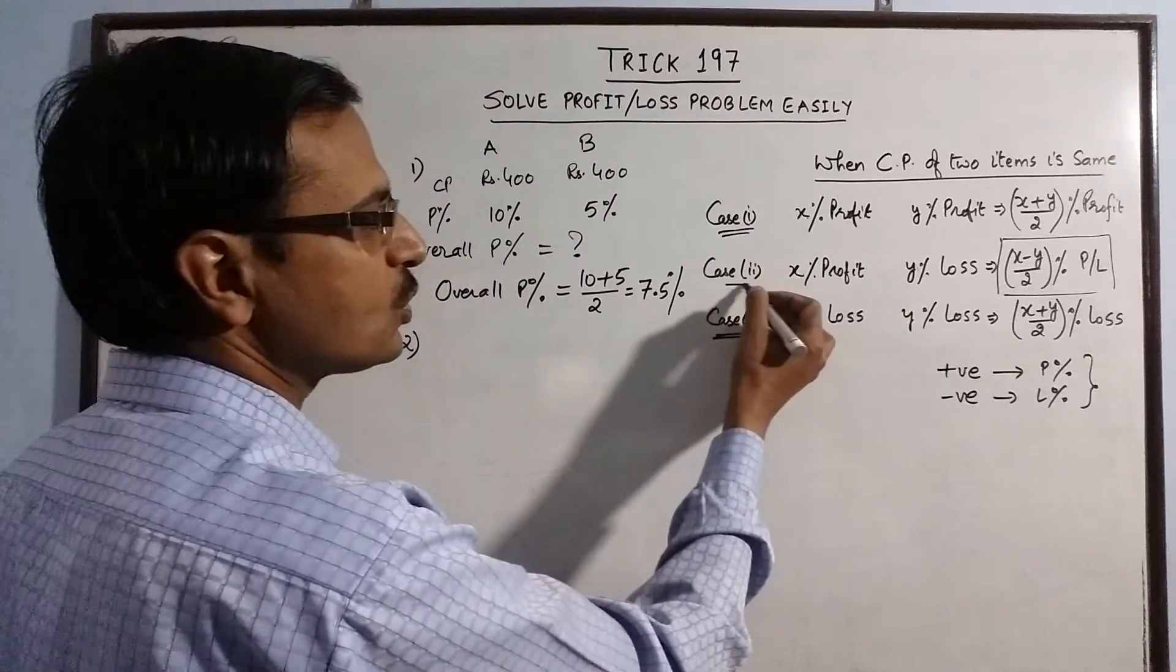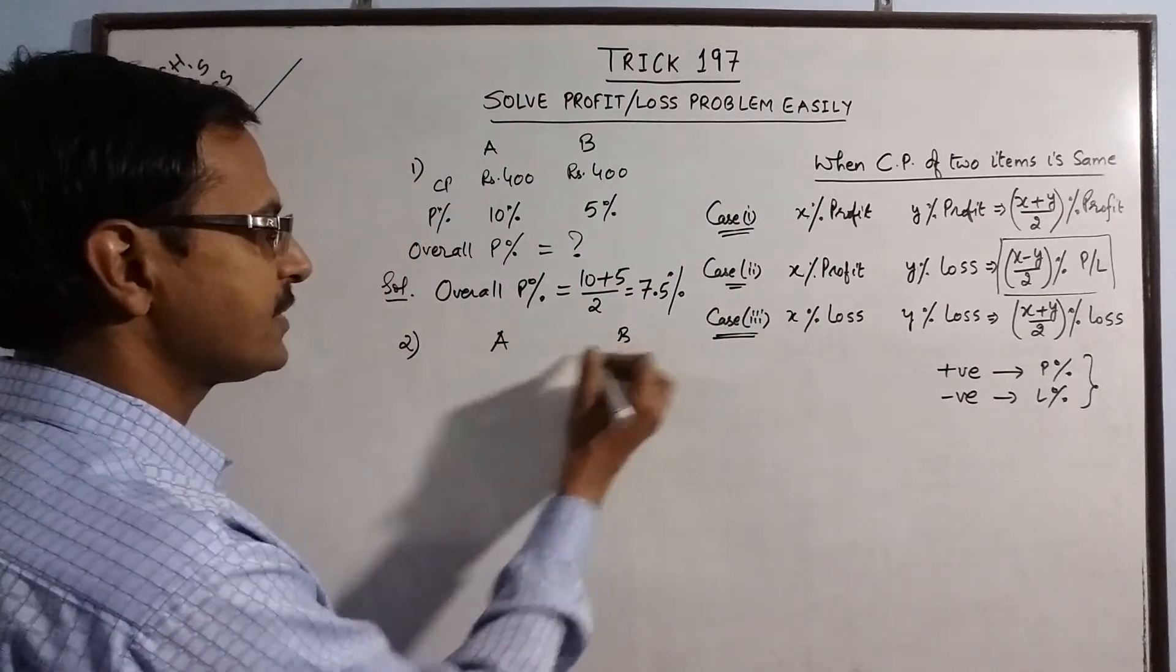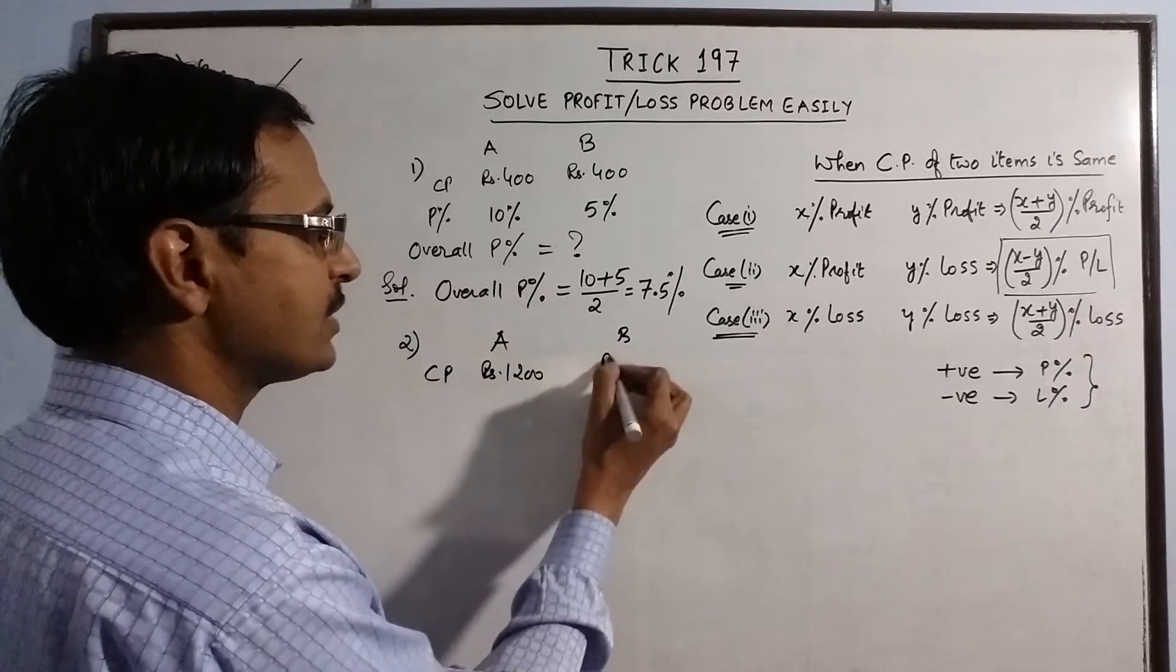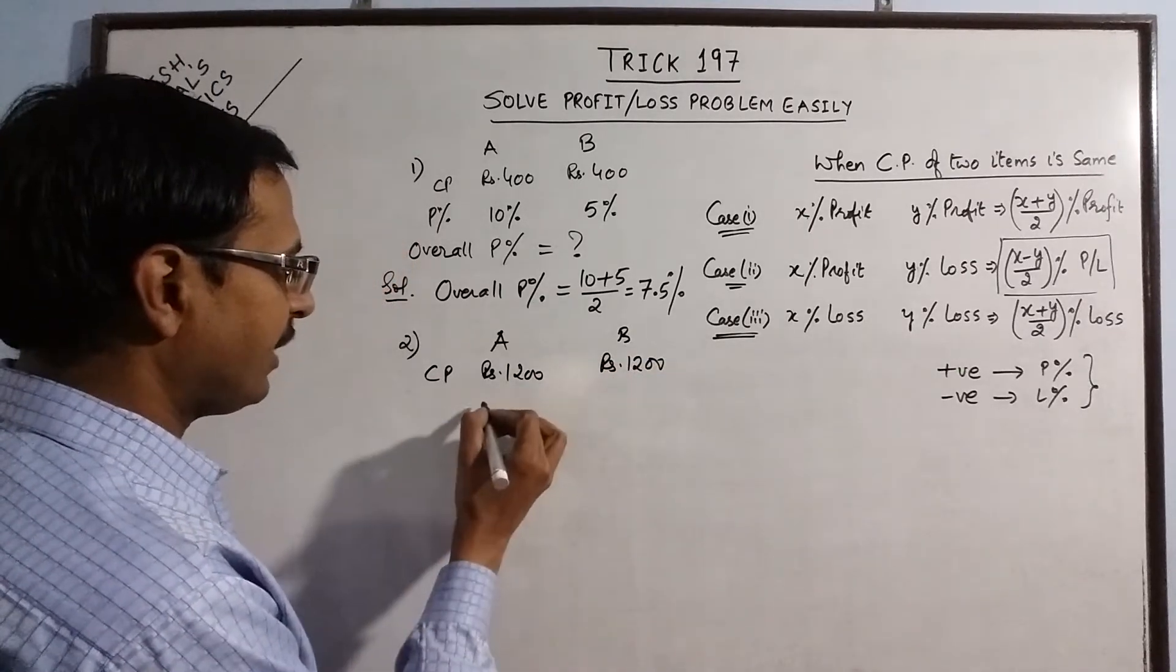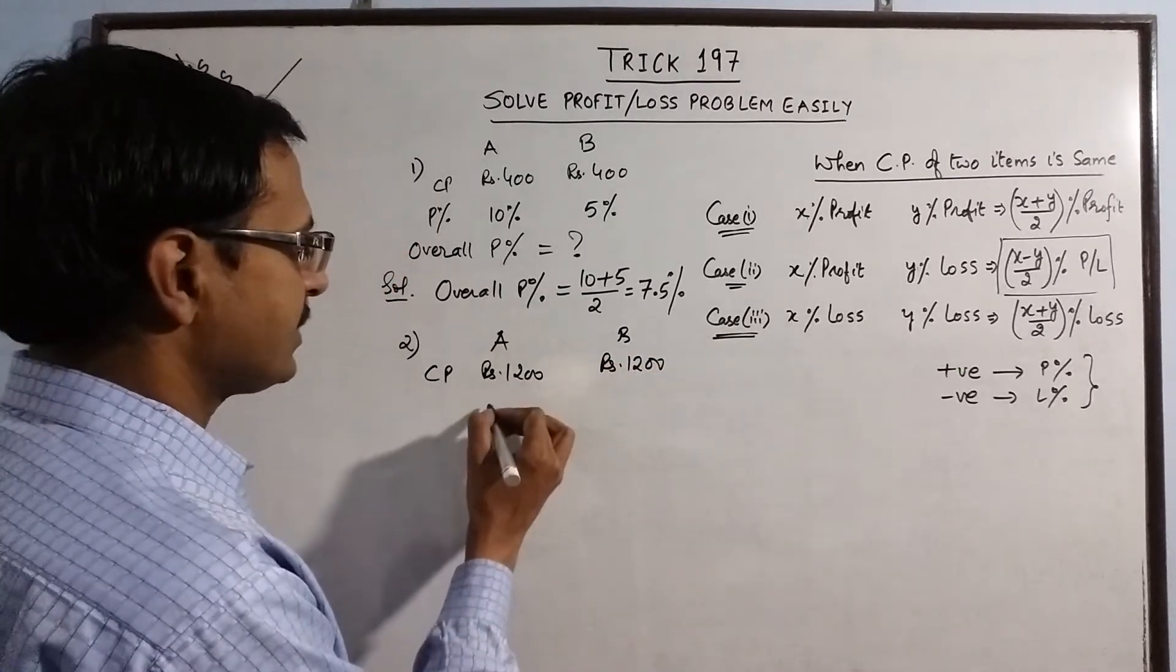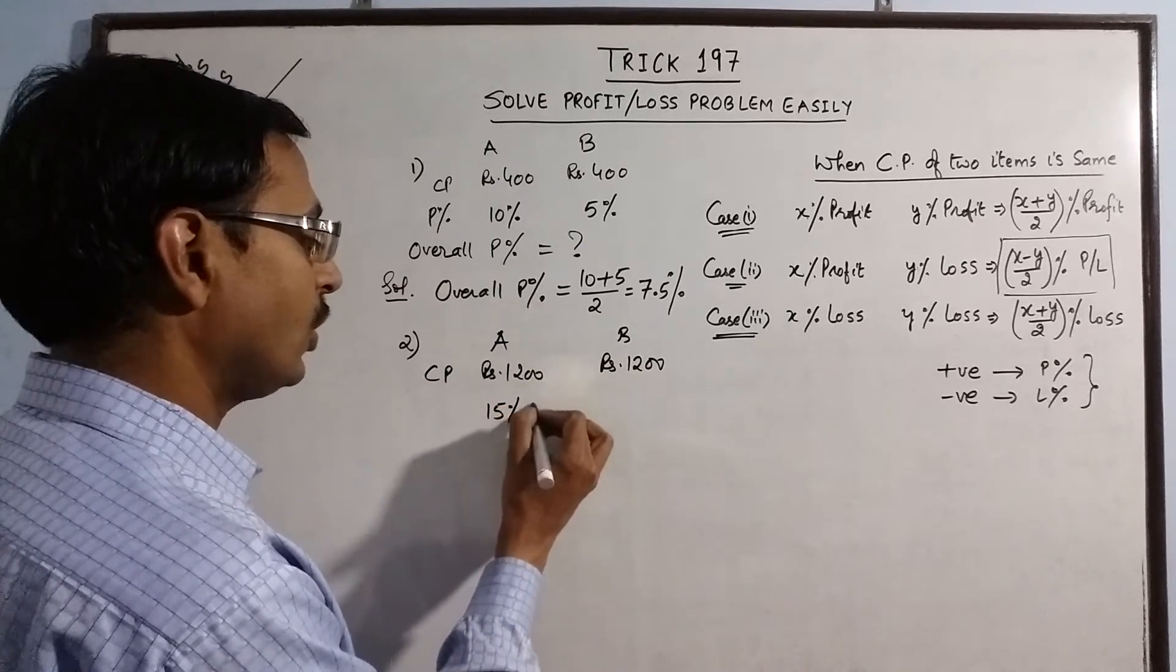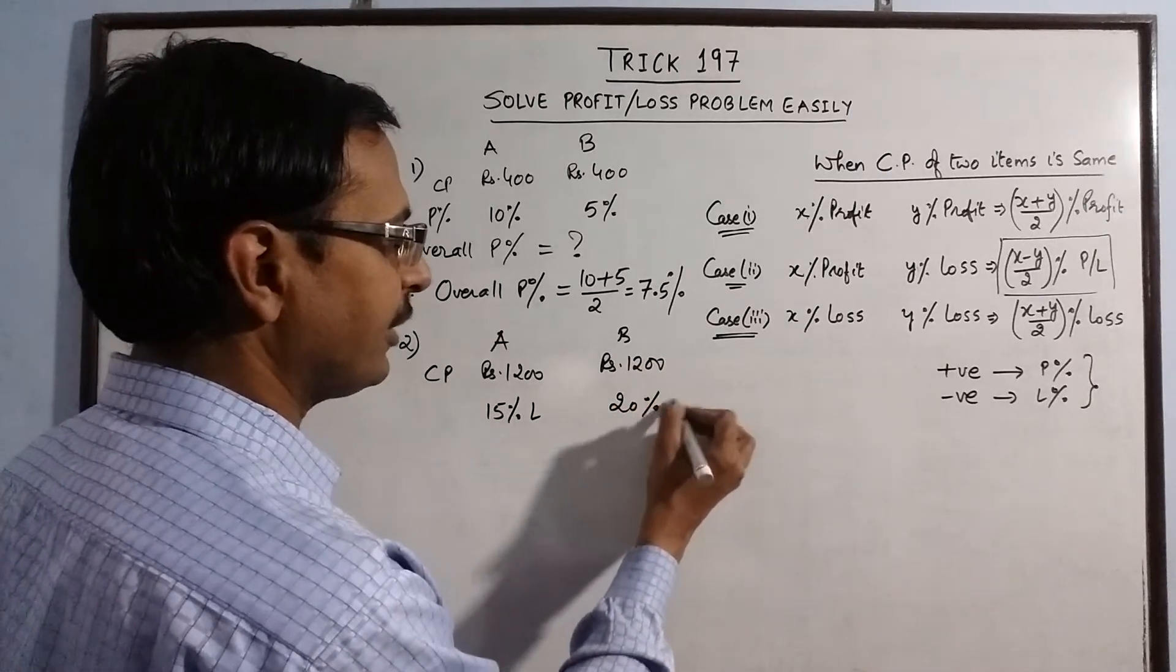So I am taking now case 2. Suppose, suppose again A and B items, we have the cost price is Rs. 1200 and Rs. 1200 and we have on A, say we have 15% loss and on B we have 20% profit.